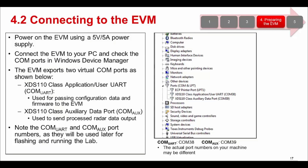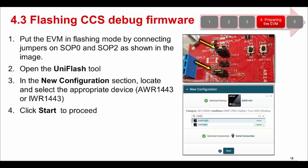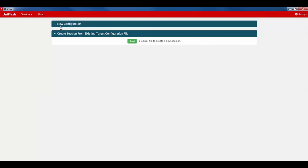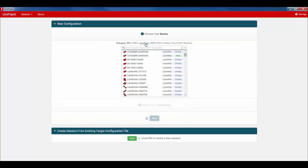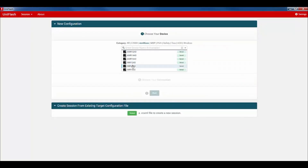First, power on the EVM and connect it to your PC through the micro-USB cable. Now open the Windows Device Manager and two virtual COM ports should be visible. Note the number of these ports as they will be used later for flashing and running the lab. Put the EVM in flashing mode by connecting jumpers on SOP0 and SOP2. Open the UniFlash tool and in the New Configuration section, locate and select the appropriate device.